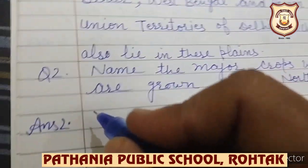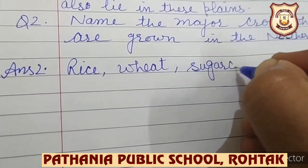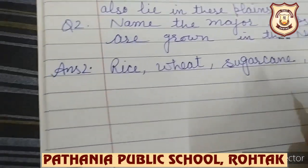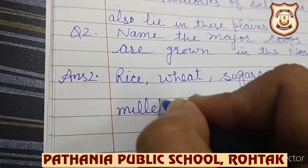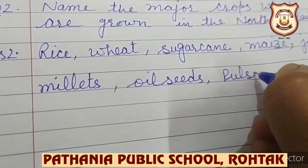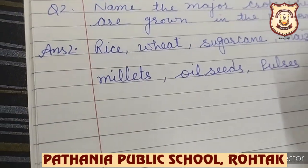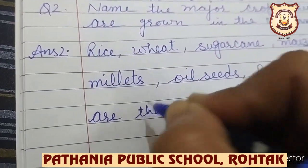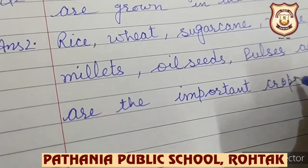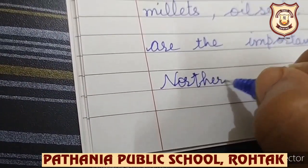You have to write: rice, wheat, sugarcane, maize, jute, millets, oilseeds, and pulses, and tea in Assam — are the important crops of the Northern Plains.